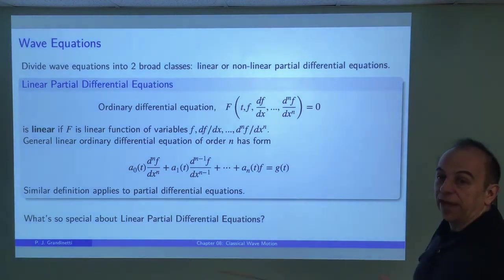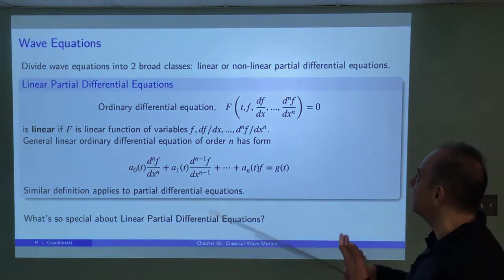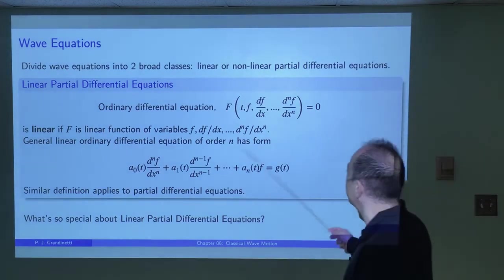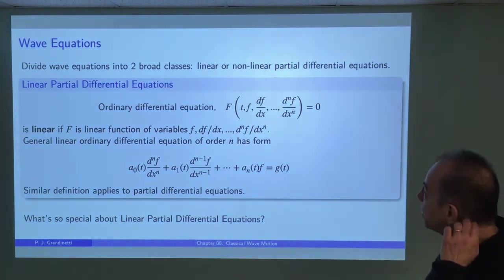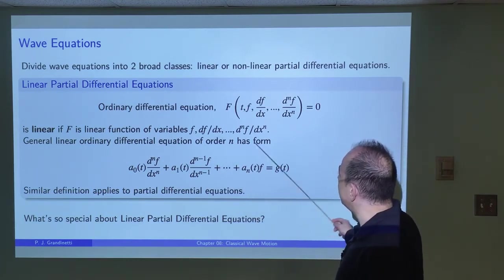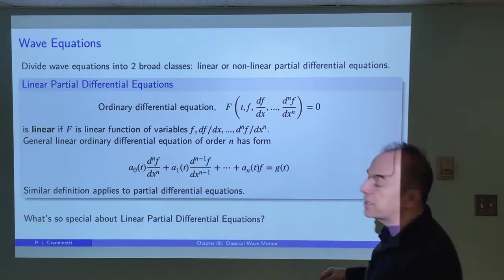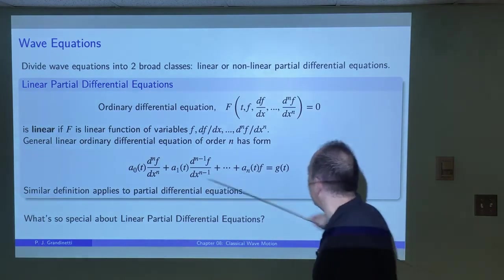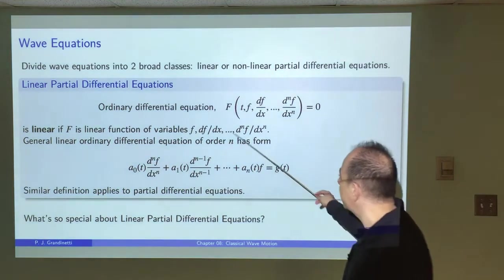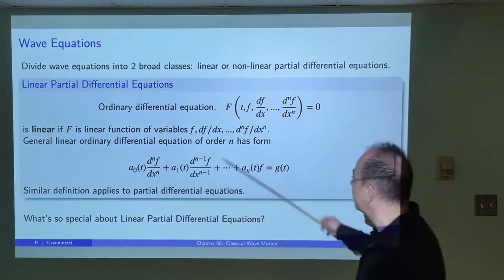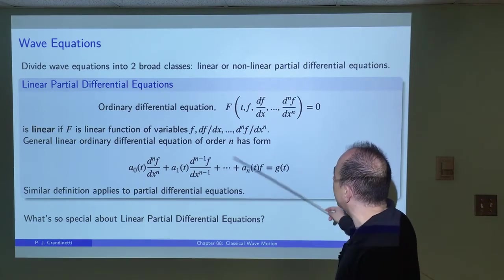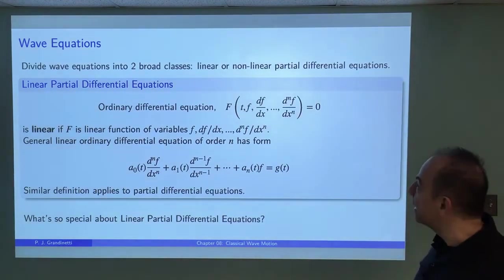We're going to be looking at two types of wave equations: linear and nonlinear. We'll only be looking at linear wave equations, categorized based on whether the partial differential equation is linear or nonlinear. A linear differential equation is one that is linear in the function and all of its derivatives. If the differential equation involves the square or some power of one of the derivatives, or a transcendental function of one of them, then it becomes a nonlinear differential equation. The waves we're going to look at are described by linear wave equations.